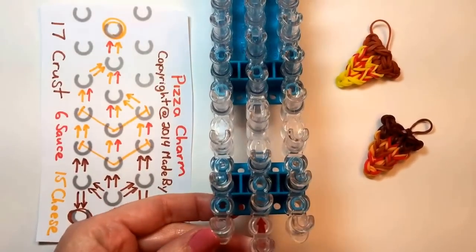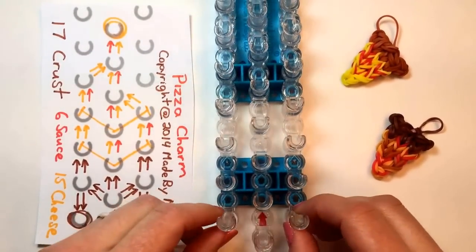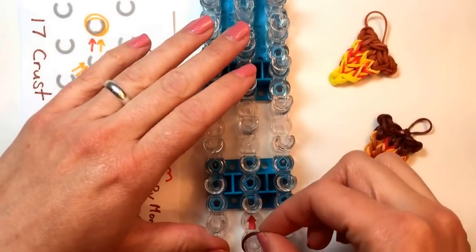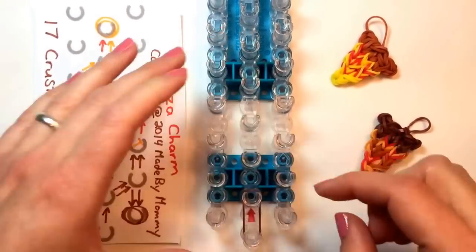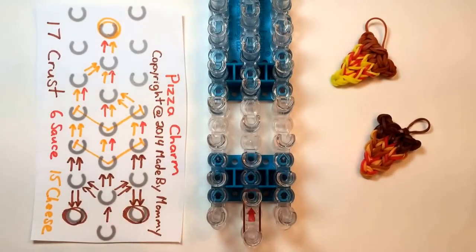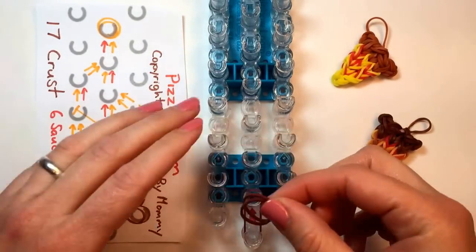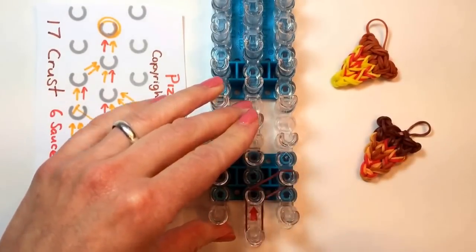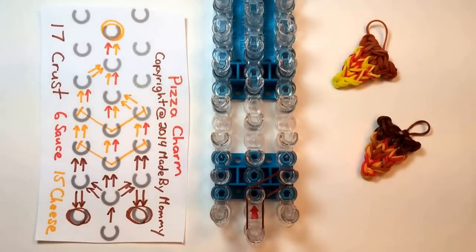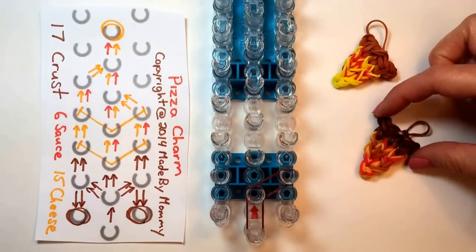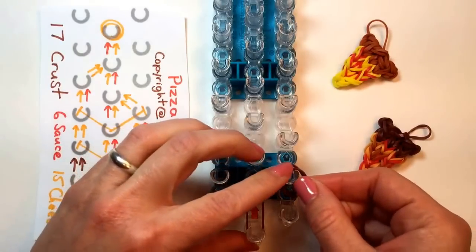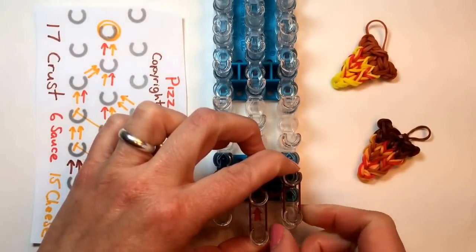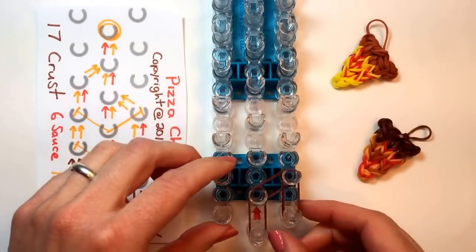I have the arrow at the bottom pointing away from me. We're going to start with a single rubber band in the color of the crust. Then we're going to take 2 at a time and place it from the center to the diagonal up on the right. And following along that path, because we want our crust to be the widest point, we're going to take from that peg that we just placed on and pull back one. And eventually we'll turn that out to the side.